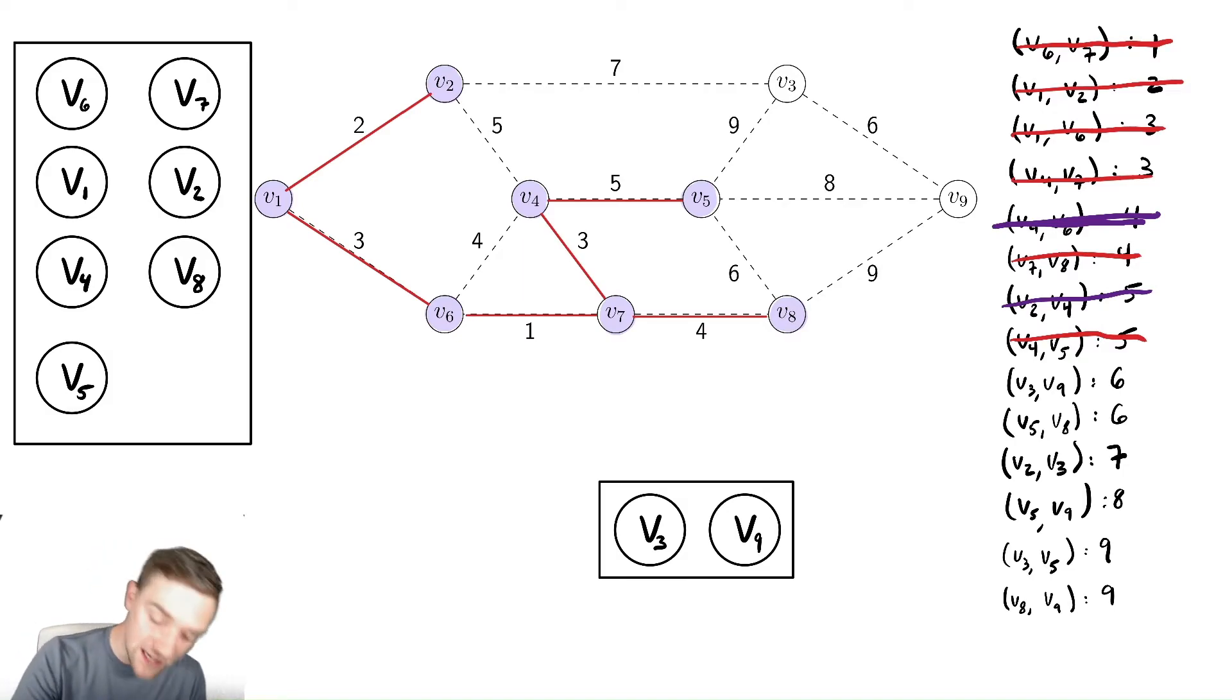Now we need to create that set that contains v3 and v9. And we then connect them with the edge we just discussed. And notice we now have all of the vertices, but they are not all in the same set. So we have not actually connected the minimum spanning tree yet. So we do remove that edge, v3, v9.